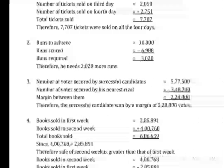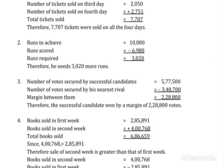To find how many more runs he needs, we do a subtraction. He wants to achieve 10,000 and he scored 6,980. So 10,000 minus 6,980 gives us 3,020.